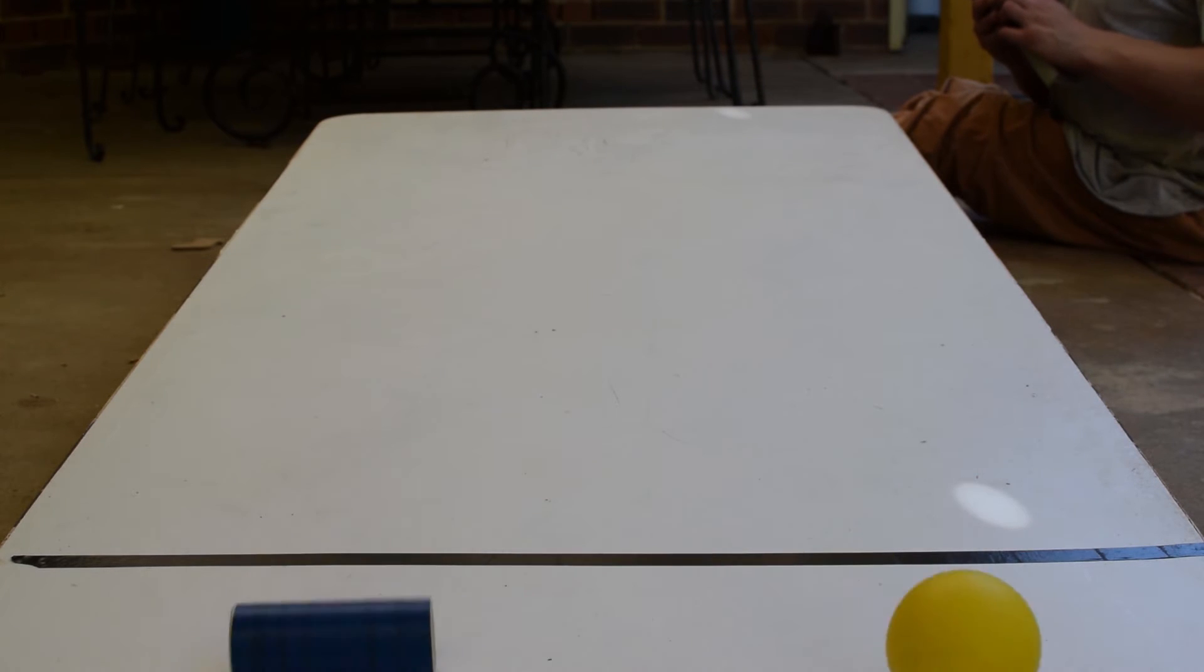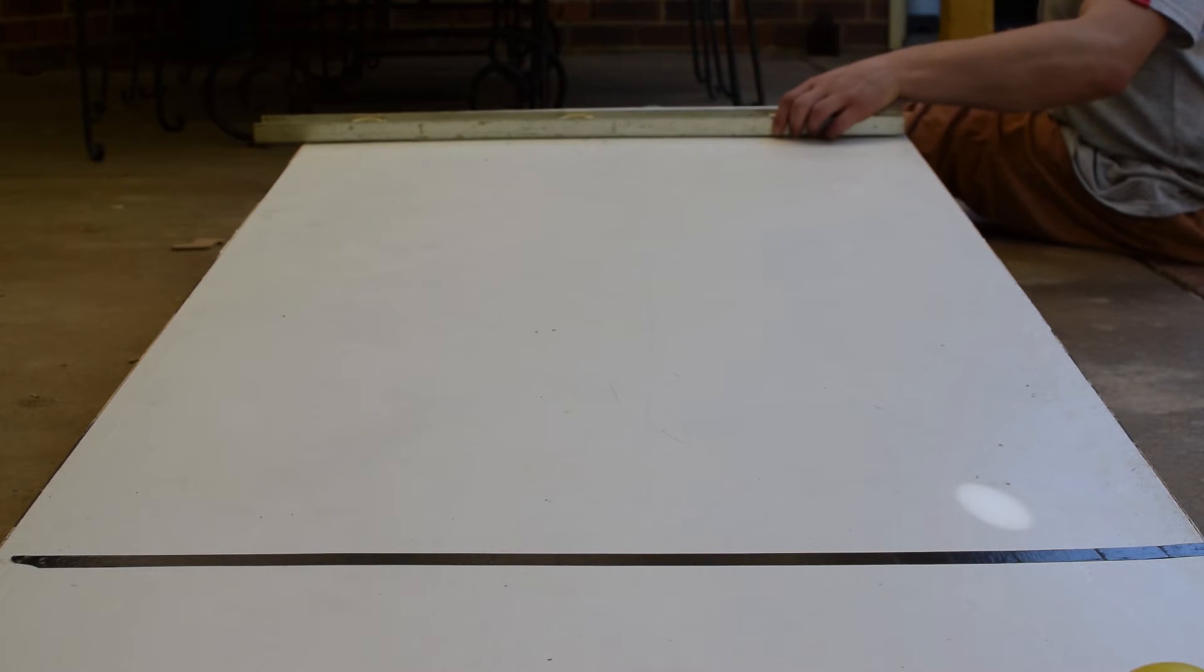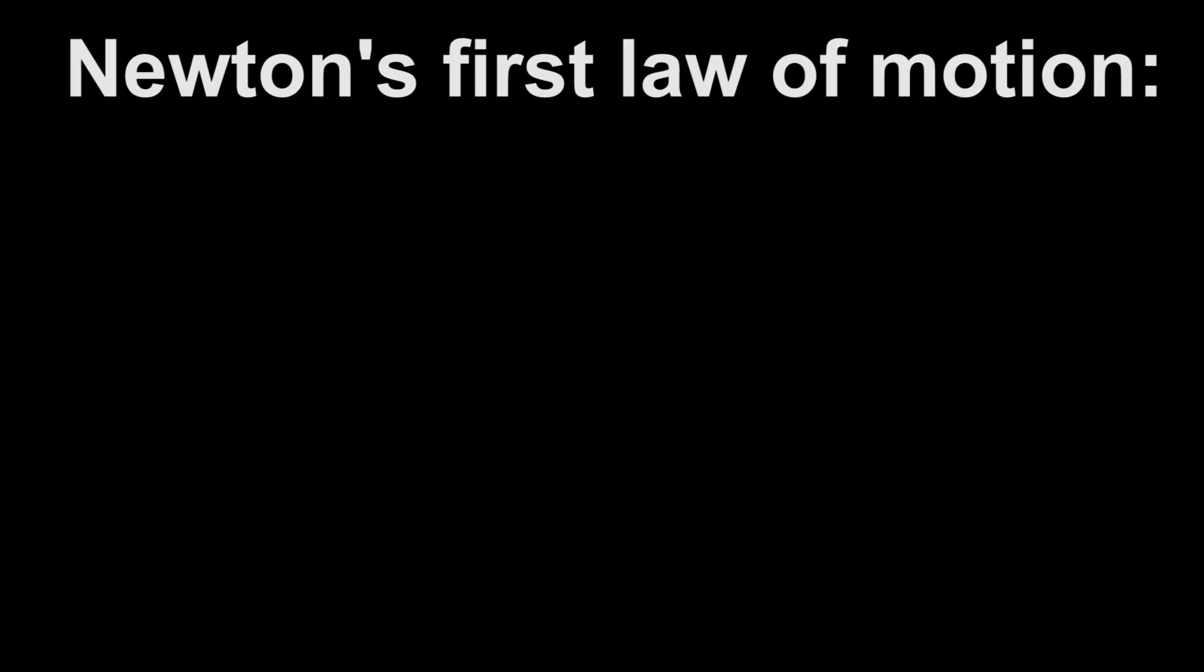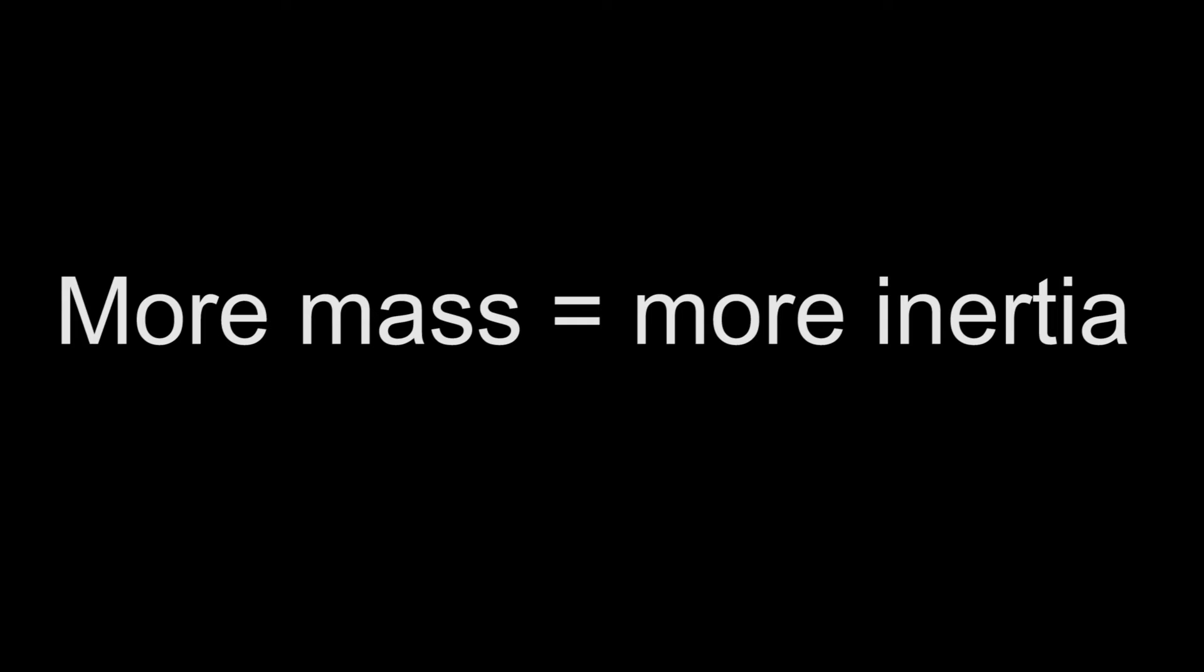Is this the result you expected? Let's talk about why this happens. Objects with mass moving in linear motion have inertia, which is summed up by Newton's first law of motion, which states that an object at rest will stay at rest, and an object in motion will stay in motion unless acted upon by an external force. The more mass an object has, the more inertia it has, requiring a greater force to change its motion.